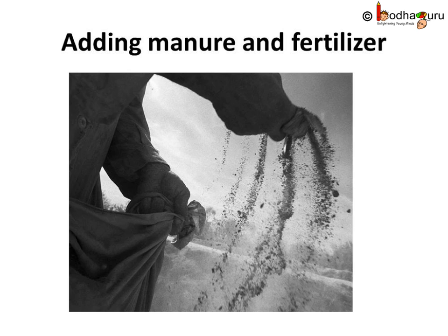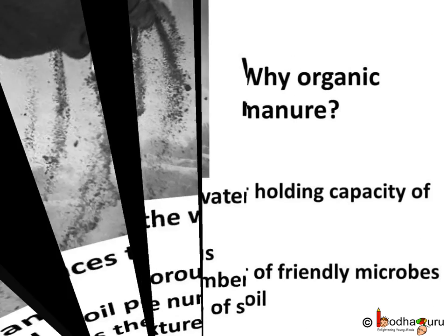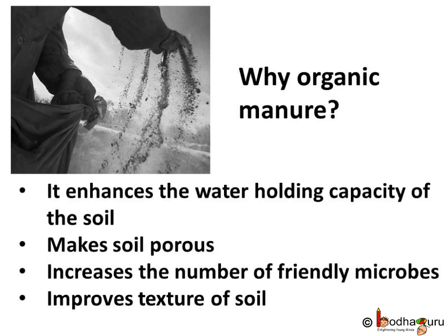Improper or insufficient manuring results in weak plants. Fertilizers are chemical substances which are rich in a particular nutrient and are produced in factories. For example, urea, ammonium sulphate, super phosphate, potash, NPK etc. On the other hand, manure is an organic substance obtained from the decomposition of plant and animal waste.